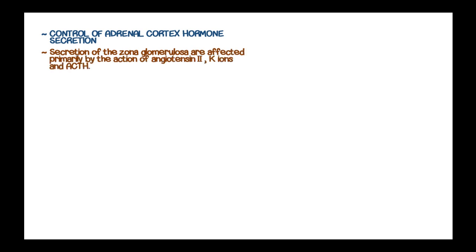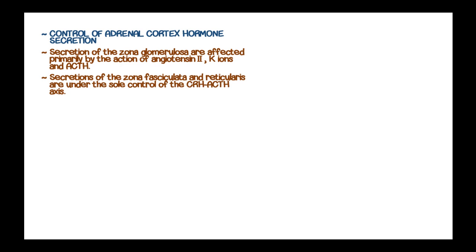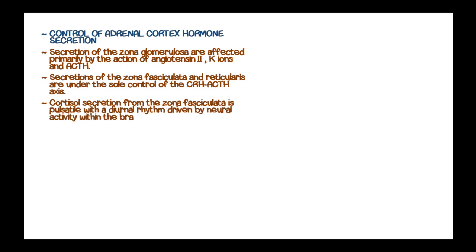Secretions of the zona glomerulosa are affected primarily by angiotensin II, potassium ions, and adrenocorticotrophic hormone. Secretions of the zona fasciculata and reticularis are under the sole control of the corticotropin-releasing hormone and ACTH axis. Cortisol secretion from the zona fasciculata is pulsatile with a diurnal rhythm that is driven by neural activity within the brain and stimulates pulsatile corticotropin-releasing hormone release.